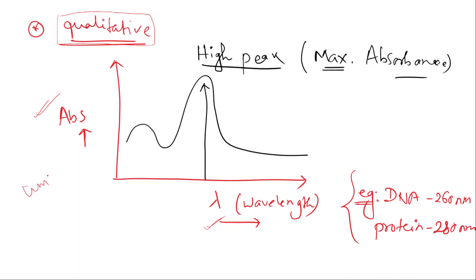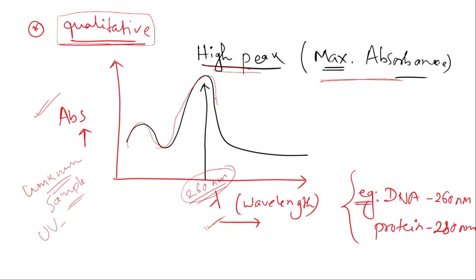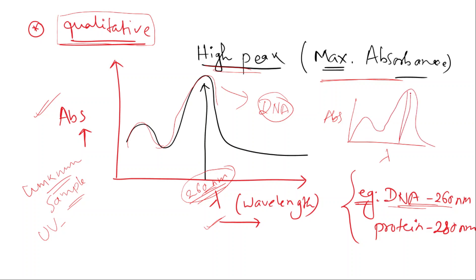For an unknown sample, we run the spectrophotometer and look at the compound's absorption spectrum to find the peak. The maximum peak at 260 nm means maximum absorbance. For example, DNA shows a maximum absorbance peak at 260 nm. This is used for qualitative analysis.